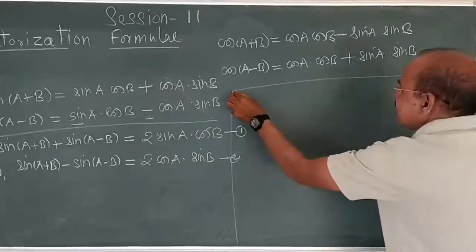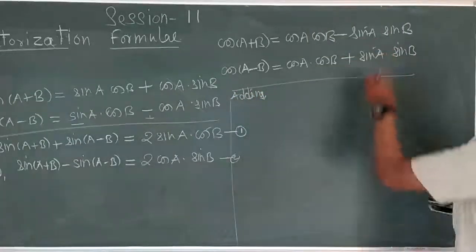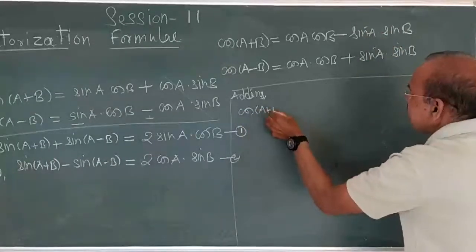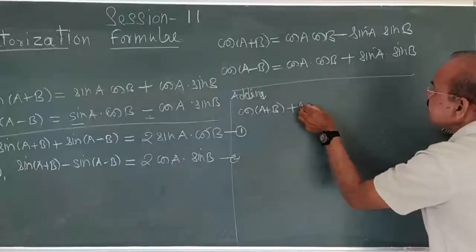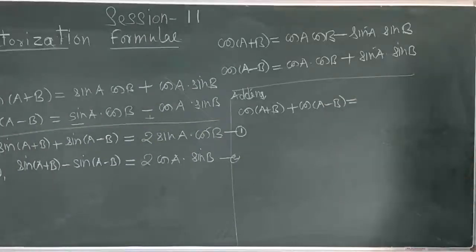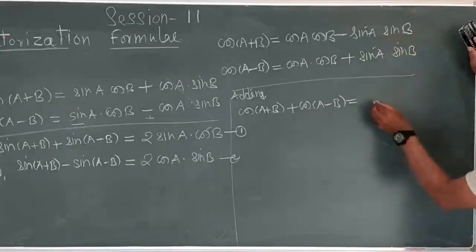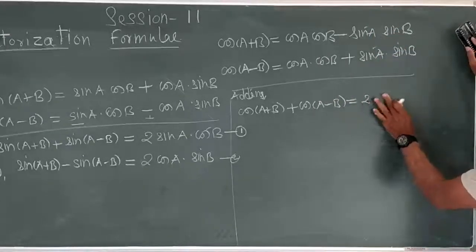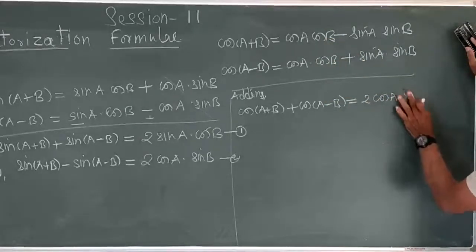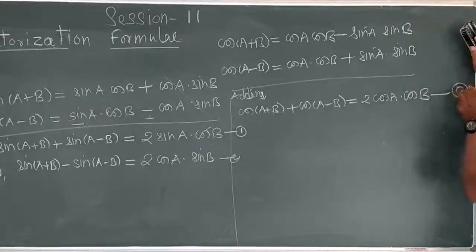If you do their addition, the opposite sign terms will cancel. So the first result: cos A plus B plus cos A minus B. The opposite sign terms cancel, and what remains? cos A cos B, cos A cos B — two terms remain, giving 2 times cos A into cos B. That is your third formula.